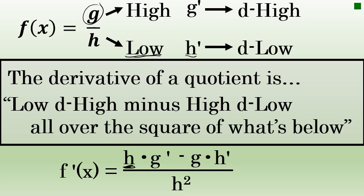Low is h in our fraction. D high is the derivative of g in the fraction g over h, minus high d low — high is g, and d low is the derivative of h — all over the square of what's below. This refers to the fact that when you differentiate a quotient, the denominator is squared.